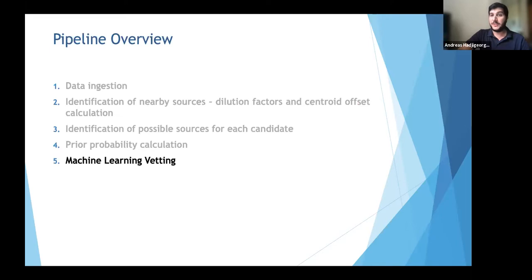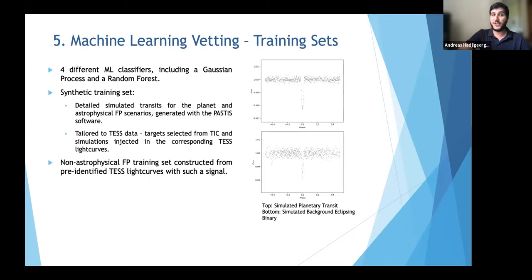We use four different machine learning classifiers including Gaussian process and random forests, trained on a synthetic training set constructed from detailed simulated transits generated with the FASTEST software. Simulations are specifically tailored to TESS data by choosing targets from the TESS Input Catalog and injecting simulations into corresponding TESS light curves. For non-astrophysical false positives we construct a training set from pre-identified TESS light curves containing such signals.